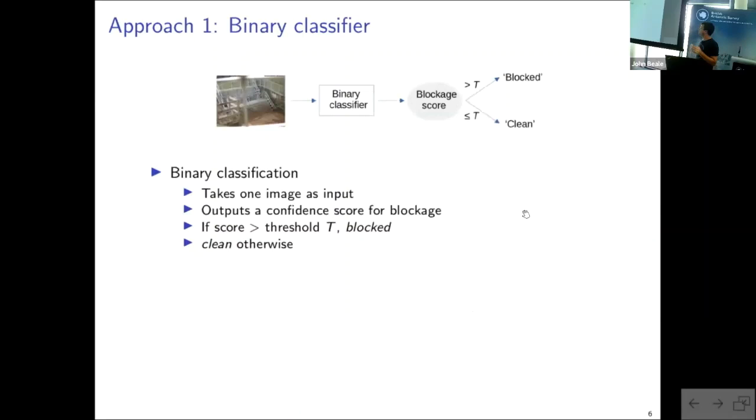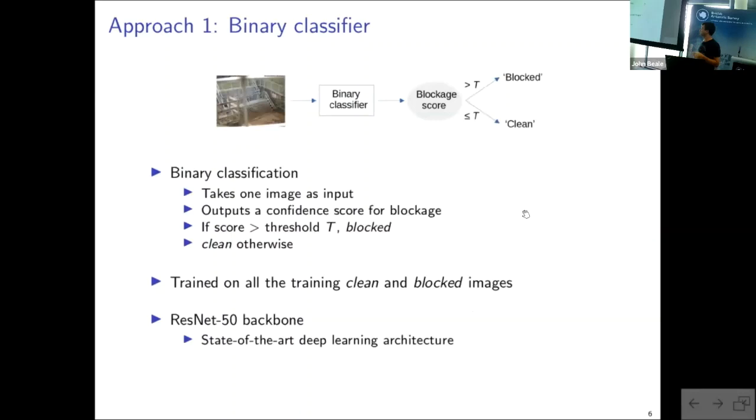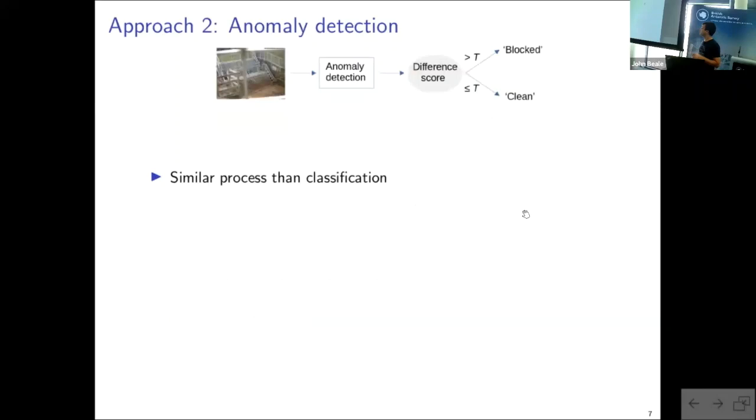So the binary classifier, its idea is quite simple. So it takes as input an image, and it outputs a blockage score. If this score is above a given threshold, then the image is considered as blocked. If not, it's clean. And so this method is basically trained on all of the clean and blocked images that I have labeled in my dataset. And to train the network, I use a ResNet-50 architecture. That, if you know a bit about deep learning, is really a classic architecture used in computer vision. And as I said, I really consider this as the baseline method that uses all of my dataset and does not make any assumption on the availability of new images.